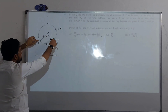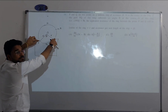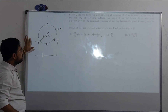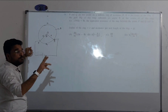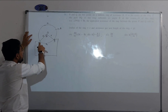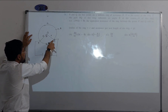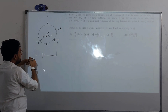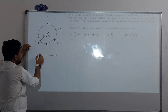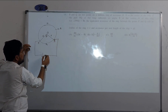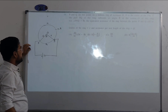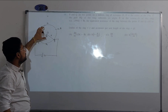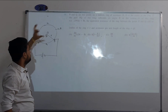We need to find the equivalent resistance between P and Q. To do this, we connect a battery at the two points: positive terminal at P and negative terminal at Q.